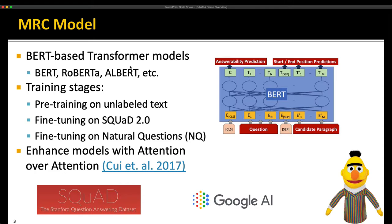So how we approach this is with our machine reading comprehension model. We use BERT-based transformer models of BERT, RoBERTa, ALBERT, etc. You can see on the diagram on the right how we take a question and pair that with a candidate paragraph, and you run it through the network to get both a prediction of the answerability, whether you've answered the question from the document, and also where the start and end positions within the document of the correct answer are.